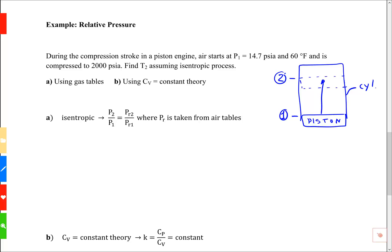For using the gas tables, we're told it's an isentropic process. If the process is isentropic there's a special relationship that says the actual pressure ratio for the gas property is equal to PR2 divided by PR1, where PR is taken from the air tables. PR is the relative pressure. It's not really a pressure, it's a function of temperature that's useful only in an isentropic process.